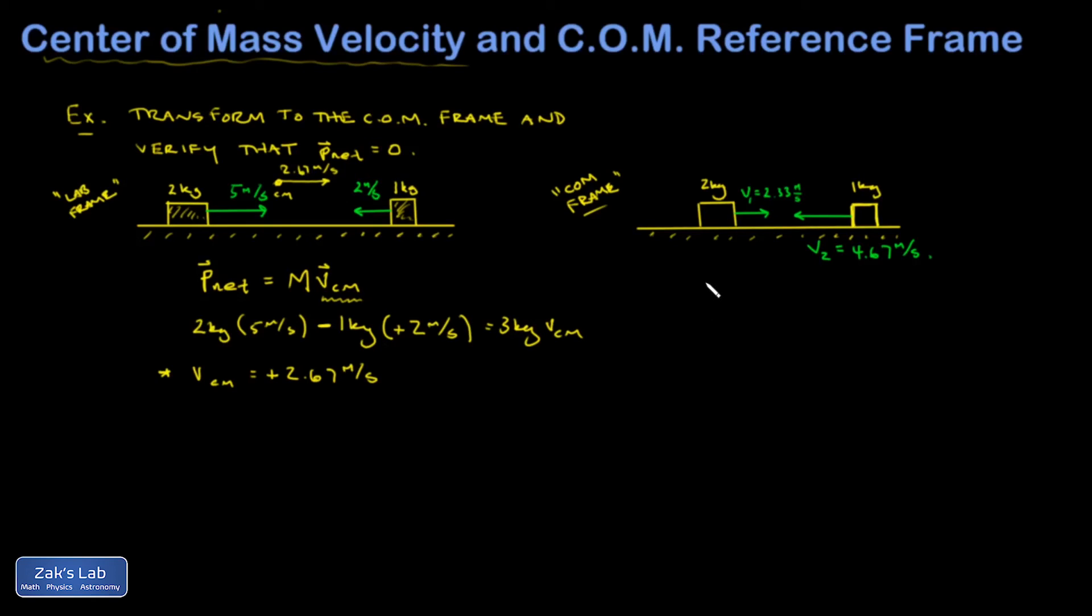So let's just verify here that the net momentum turns out to be 0 in the center of mass frame. And I have p net is equal to the first mass times its velocity. Second term has a negative velocity. The mass is 1 kilogram. Speed is 4.67 meters per second. And I have been rounding a little bit, so it's not exact. But I have 4.66 kilogram meters per second pointing to the right from that first mass, and then a 4.67 with a minus sign on it pointing to the left.